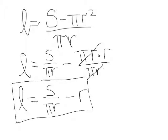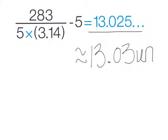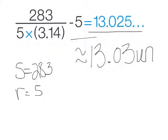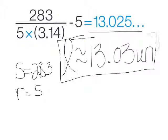So using the values from the book, they had said that S was 283 and the radius was 5 and we were using 3.14 as an estimate for π. And by using all those values, I have my final answer is that l equals 13.0 units.